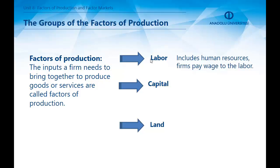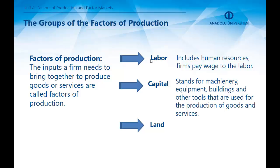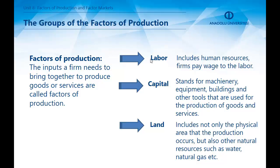Let's look at labour first. It includes human resources, and firms pay wages to labour — these are the workers. Next is capital, which stands for machinery, equipment, buildings, and other tools used for the production of goods and services. And the last one is land, which includes not only the physical area where production occurs, but also other natural resources such as water and natural goods.